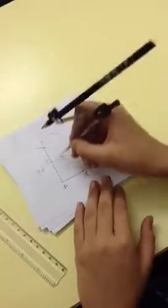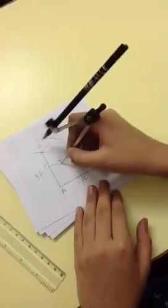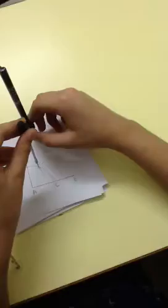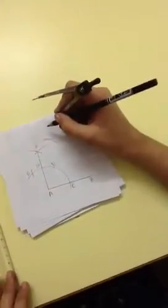Now we are going to, without changing the radius, put the point of our rounder on D and make another arc. We can name this point as H and we'll join A and H.